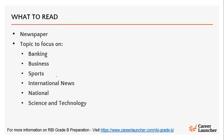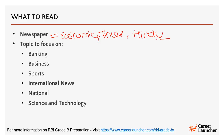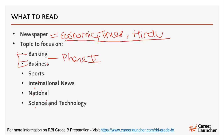Coming to what you have to read while preparing for this section: two newspapers — Economic Times and The Hindu — are must-reads for all of you. You need to be updated with what is happening in the economy, the banking sector, and business in general. The topics you need to focus on while reading these newspapers are banking, business, sports, international news, national news, and science and technology.